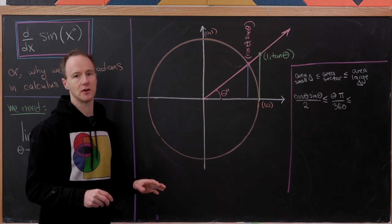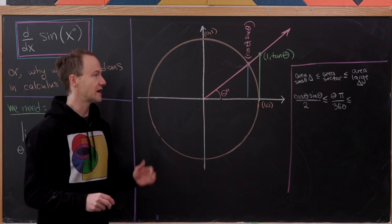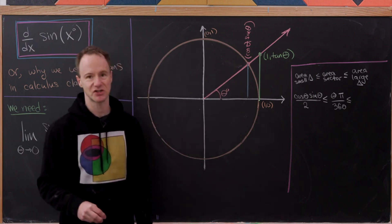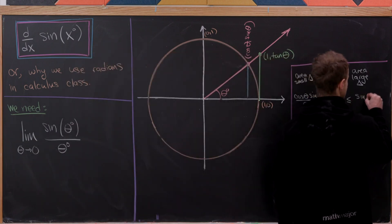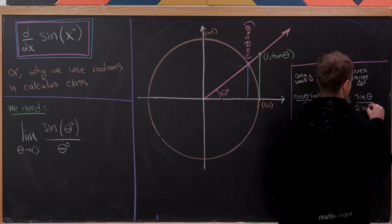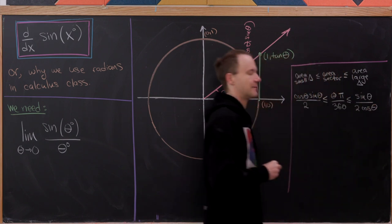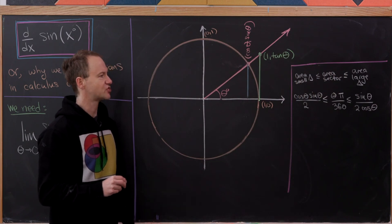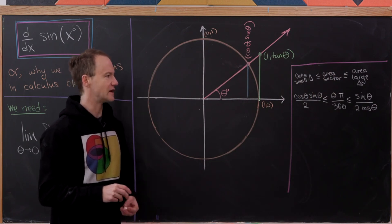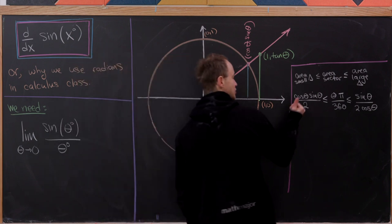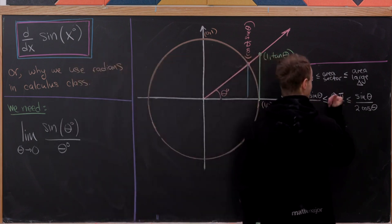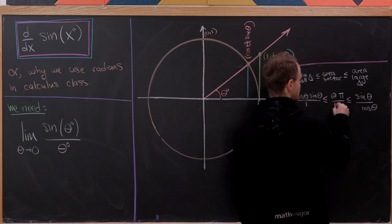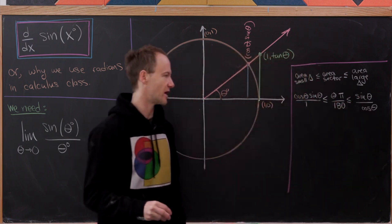And then what about the area of that large triangle? Well, again by one half base times height, we'll have one half times tangent theta. But I'm going to write that as sine of theta over 2 times cosine theta, as tangent is sine over cosine. Okay, so that's starting to look good. So next up what I'll do is I'll multiply this entire thing by 2. So that's going to have the effect of getting rid of those 2's which were in the denominator, and it'll change this 360 to 180.